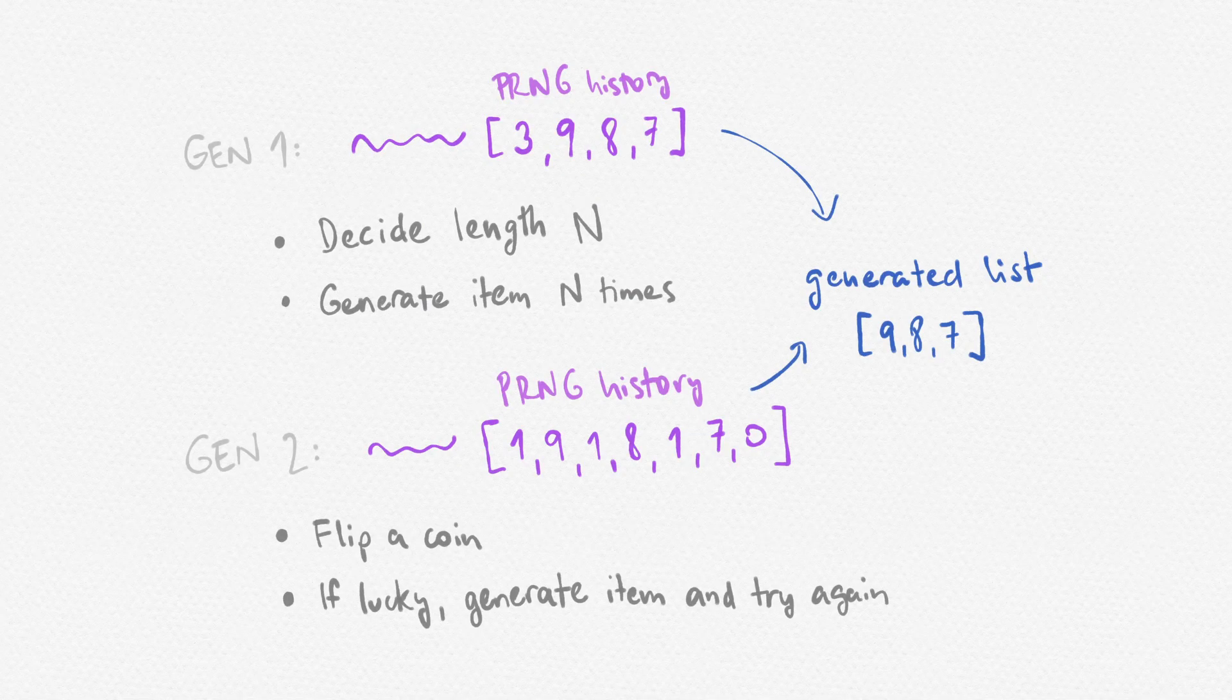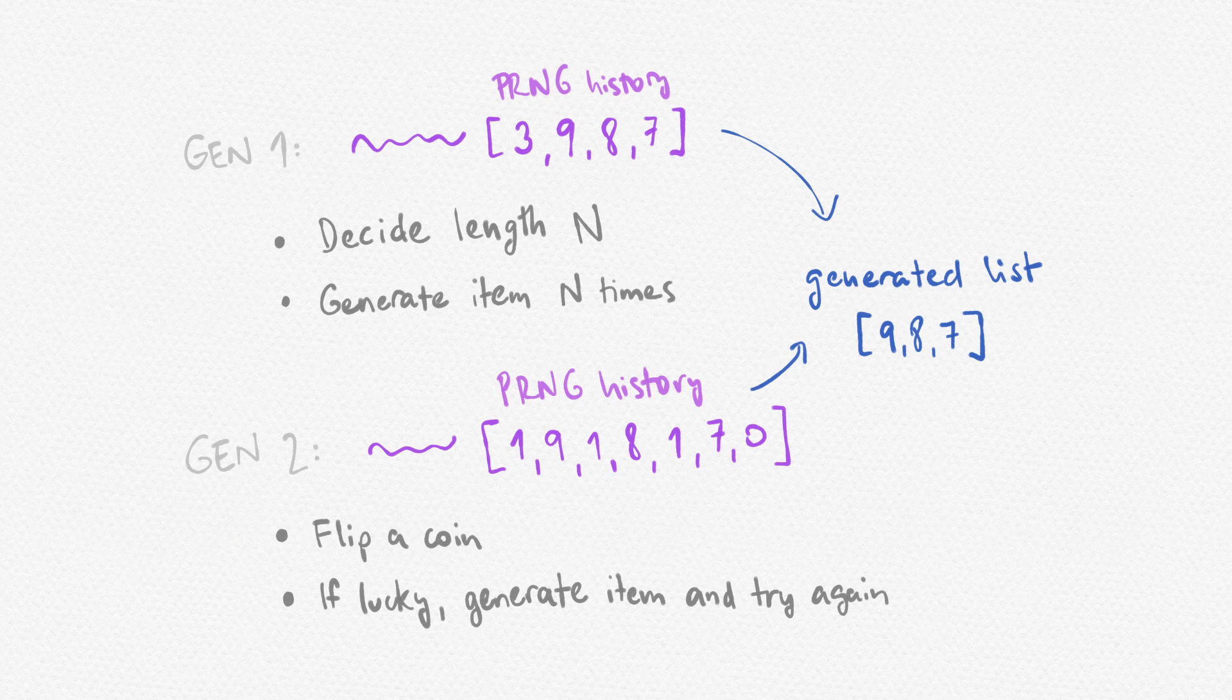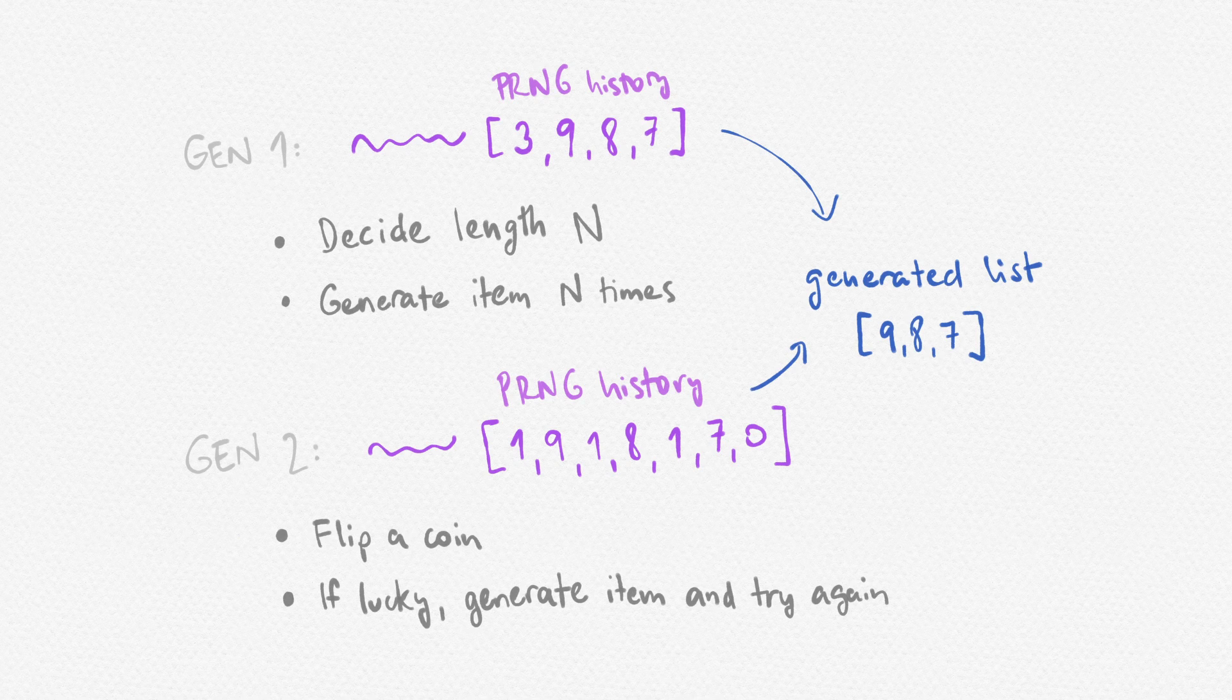So we have these two potential example generators and their differing PRNG patterns for the same value. Since not every PRNG history corresponds to a generated value, only some percentage of each will succeed in making a smaller value.